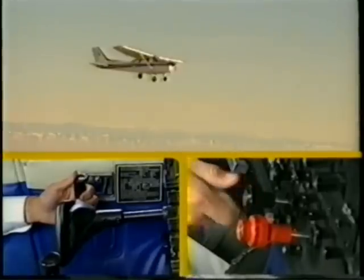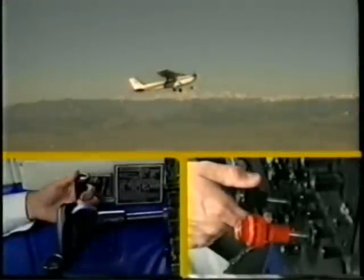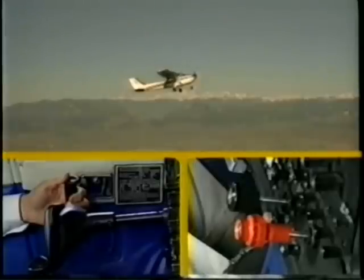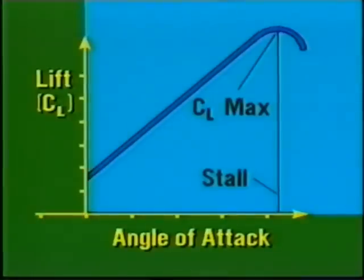For lift to remain constant, airspeed and angle of attack must be used in conjunction with each other. If airspeed increases, you must decrease angle of attack. Conversely, if you want to maintain the same amount of lift at a slower airspeed, you must increase the angle of attack. However, angle of attack can only be increased so far. For every wing there is a specific angle of attack where the maximum amount of lift is obtained. This point is called CL max, or the maximum coefficient of lift. Beyond this point, the airflow will not remain smooth over the wing, as shown by this water tank demonstration, and it becomes so turbulent that the airfoil can no longer create lift. At this point the wing is in a stalled condition.